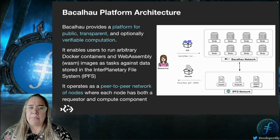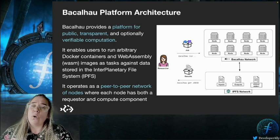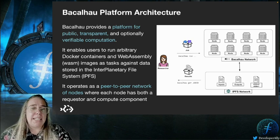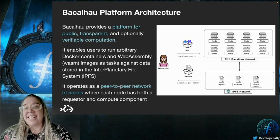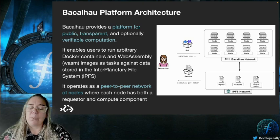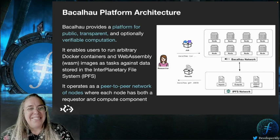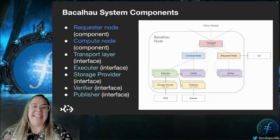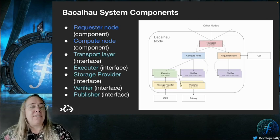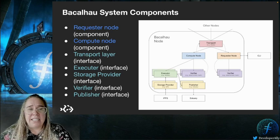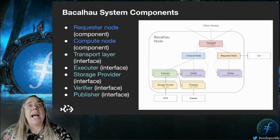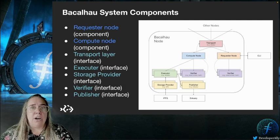So how does Bacalhau work? It's a peer-to-peer network of nodes that enable users to run Docker containers or WebAssembly images as tasks against data stored in IPFS — the InterPlanetary File System. It provides a platform for public, transparent and optionally verifiable computation, known as Compute Over Data, or COD for short. Fun fact: that's where Bacalhau's name comes from — Bacalhau is Portuguese for COD. Bacalhau CLI requests are sent to a node via JSON or HTTP, and it broadcasts messages over the transport layer to other nodes in the cluster, giving all nodes a shared view of the world.